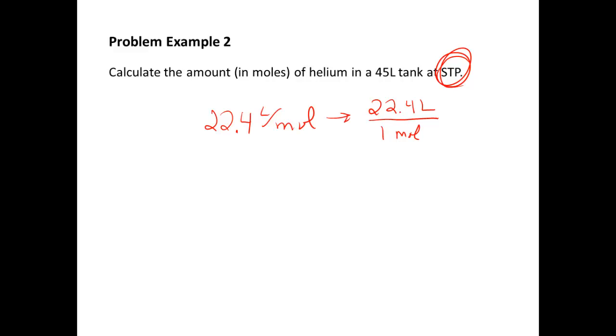So in this problem, we're going to start off with our quantity that was given, our 45 liters of helium. And we're going to cancel out our liters of helium. We want to get to moles of helium. And since it's at STP, we can use our 22.4 liters per mole. So we're going to end up dividing by 22.4 since the liters is on the bottom. Cancel out our units. And this gives us, to two significant figures because of the 45 liters, 2.0 moles of helium.